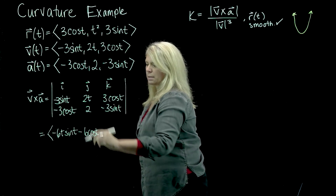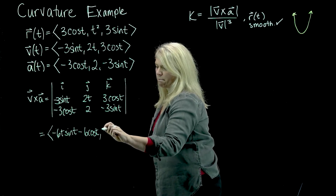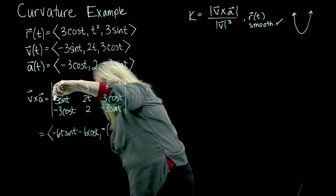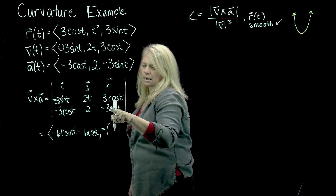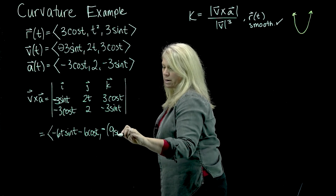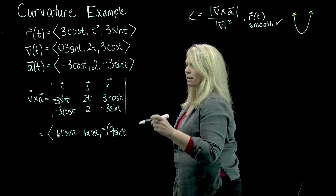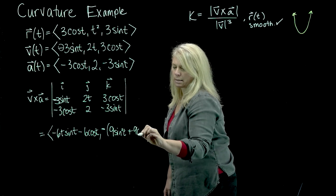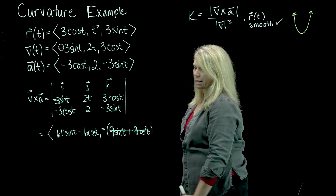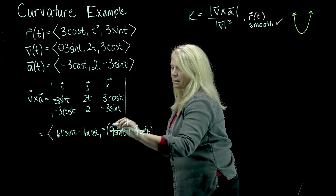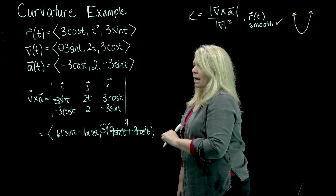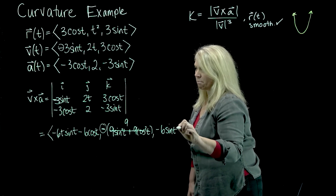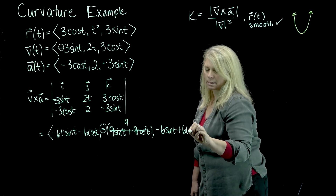When I do this cross product, we're going to have a lot of stuff — it looks pretty messy to start with. In the i component, I have this product minus this product. In the j component, we've got that minus sign — so negative 3 sine t times negative 3 sine t is positive 9 sine squared t. The minus out front on my j component, and then minus this product, which will be plus 9 cosine squared t. This part simplifies via a Pythagorean identity to 9. We don't want to forget the minus sign out front. In the k component, I'll have negative 6t sine t, minus a negative, plus 6t cosine t.